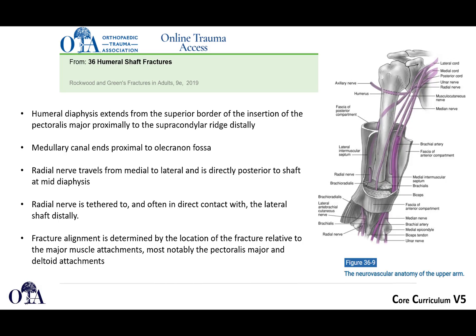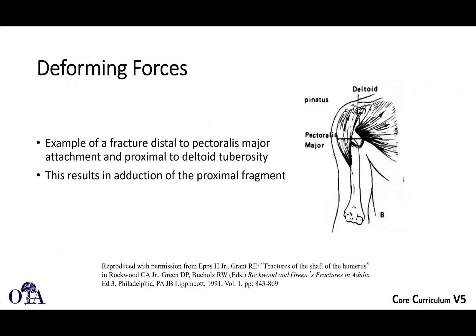The radial nerve travels medial to lateral and is directly posterior to the shaft at the mid-diaphysis, and it's often in contact with the lateral shaft distally. Fracture alignment is determined by the location of the fracture relative to the major muscle attachments, most notably the pec major and deltoid attachments — and that's what can create some deforming forces. Here's an example of a fracture distal to the pec major and proximal to the deltoid tuberosity, which can create angulation and adduction of the proximal fragment.